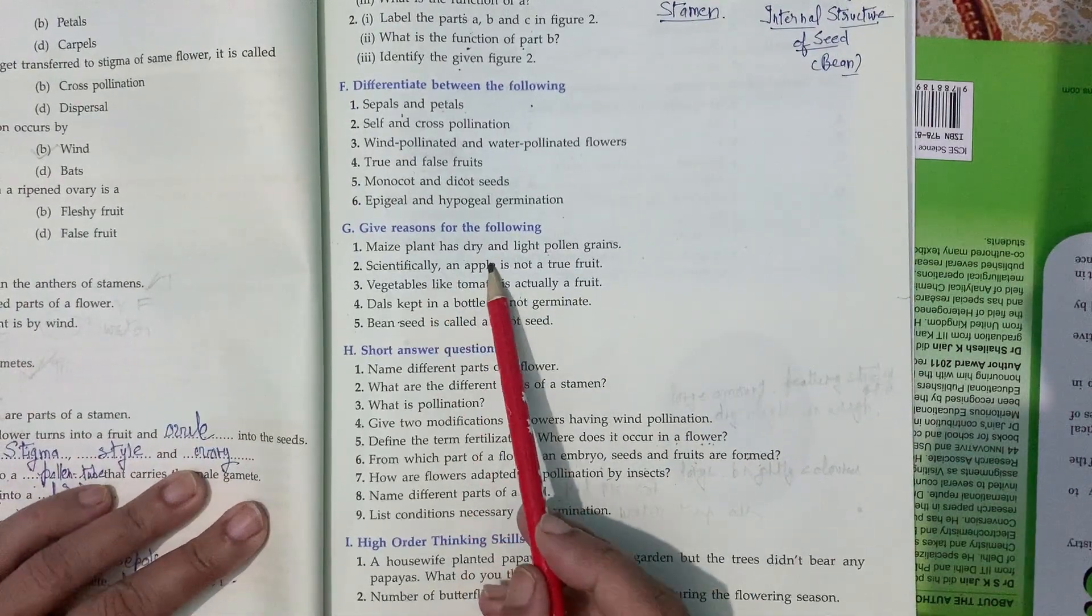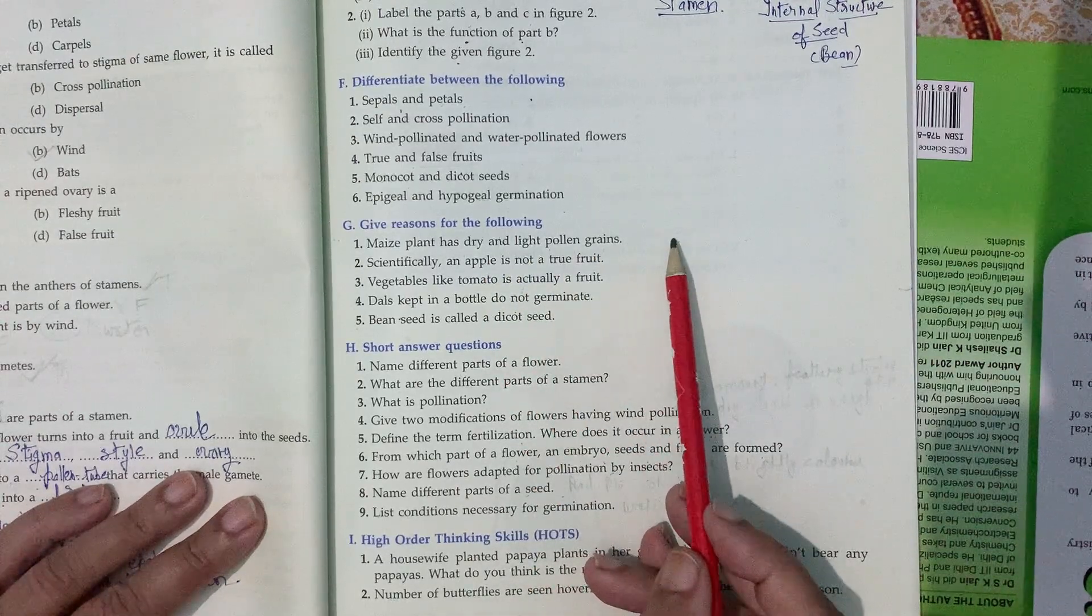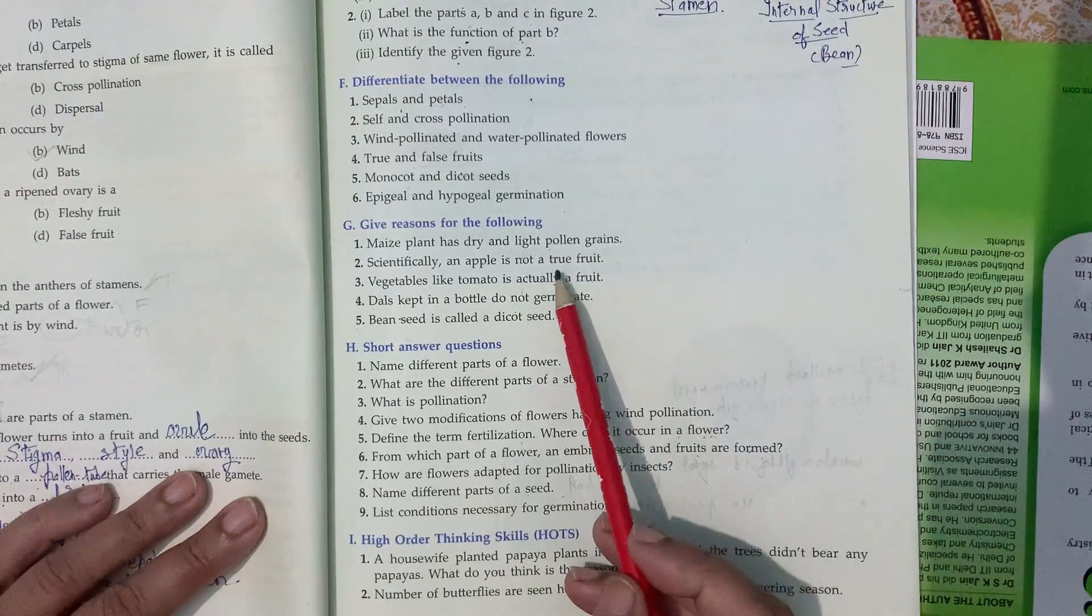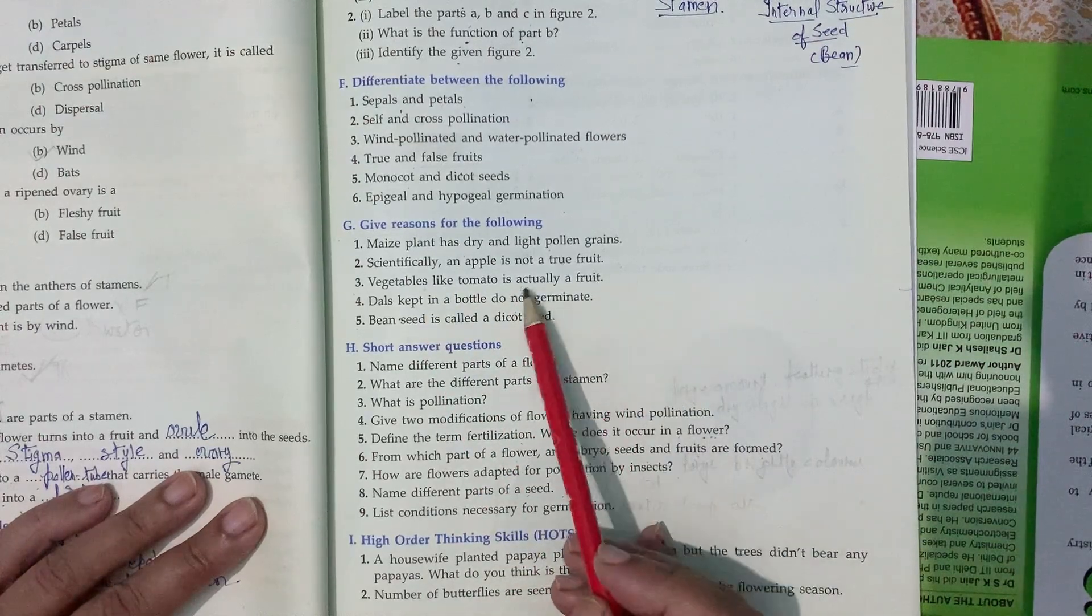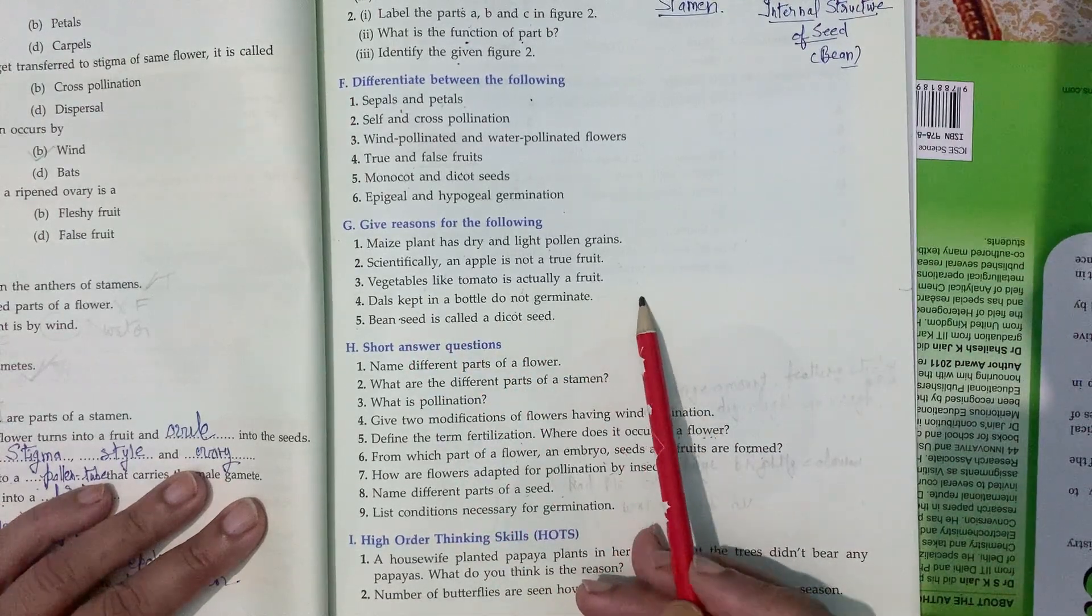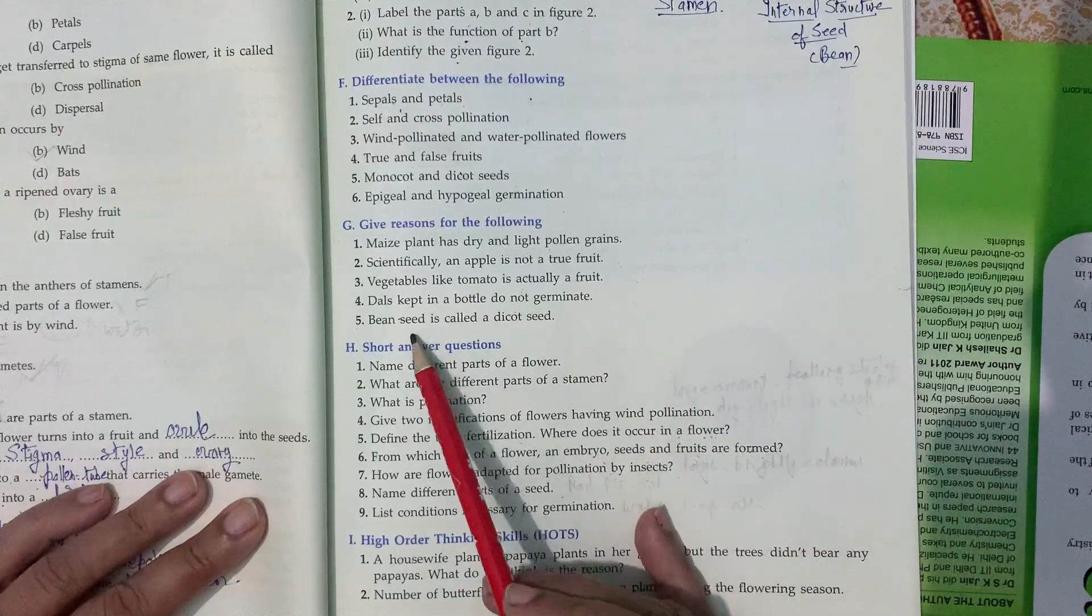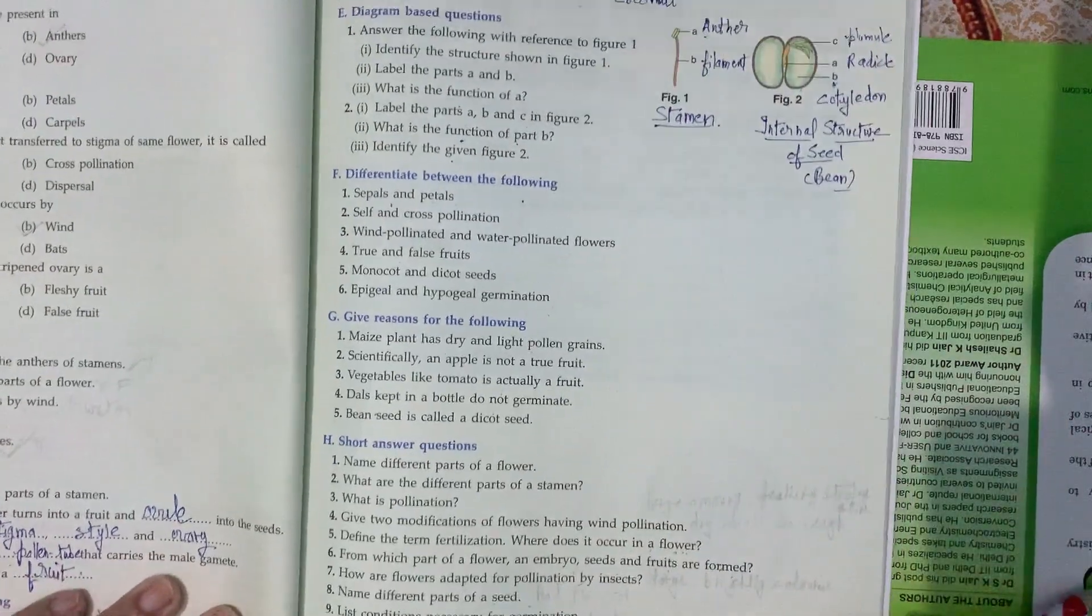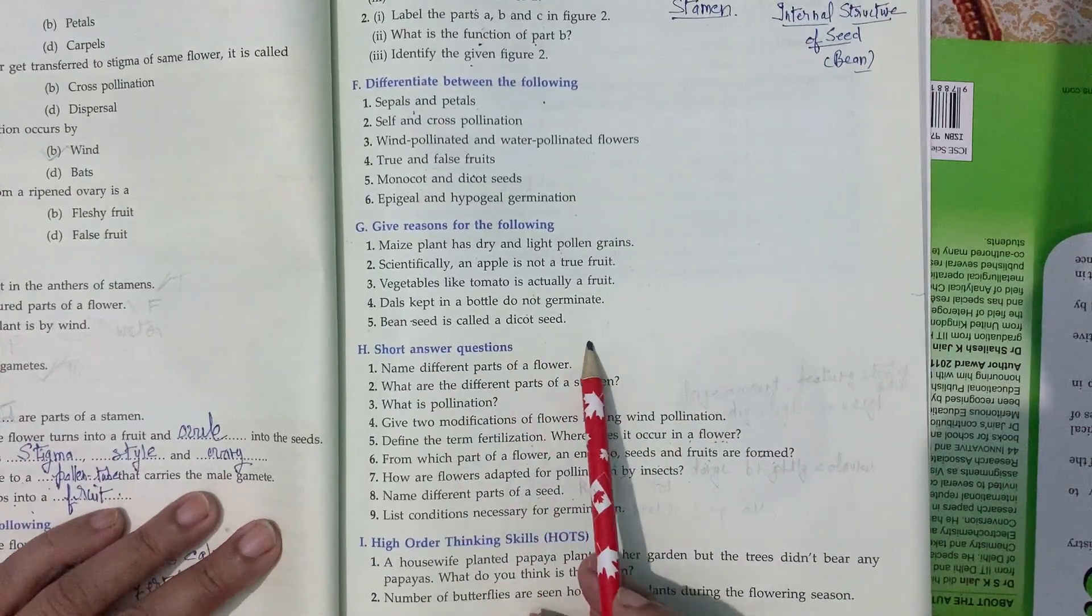Give reasons. Maize plant has dry and light pollen grains because they are pollinated by air. Scientifically, apple is not a true fruit because apple develops from the thalamus. Vegetables like tomato is actually a fruit because they develop from ovary. Seeds kept in the bottle do not germinate because they do not get moisture inside. Bean seed is called dicot seed because it has two cotyledons.